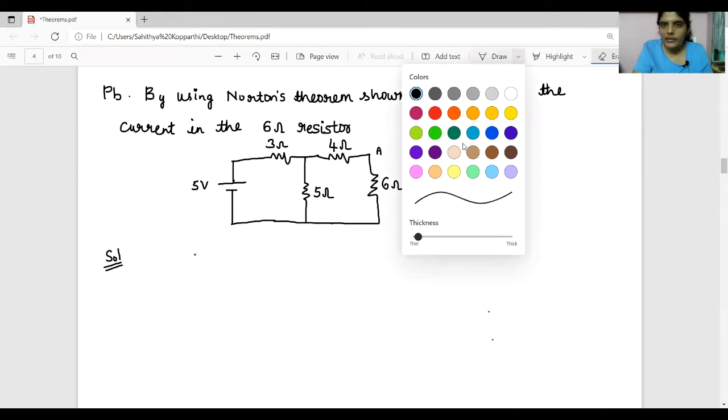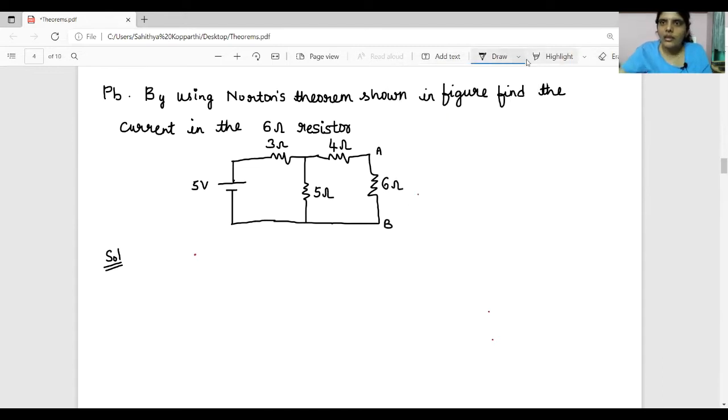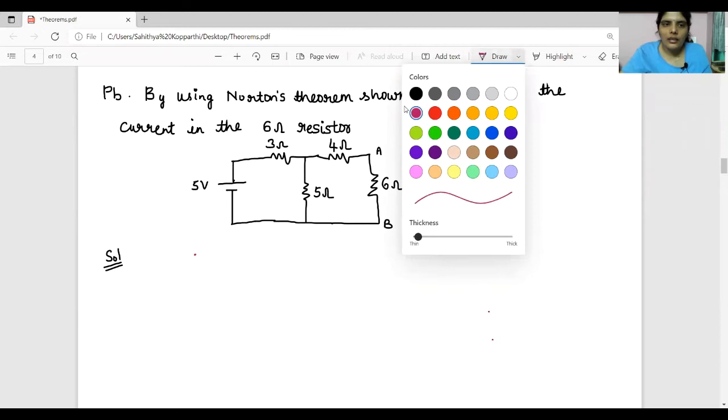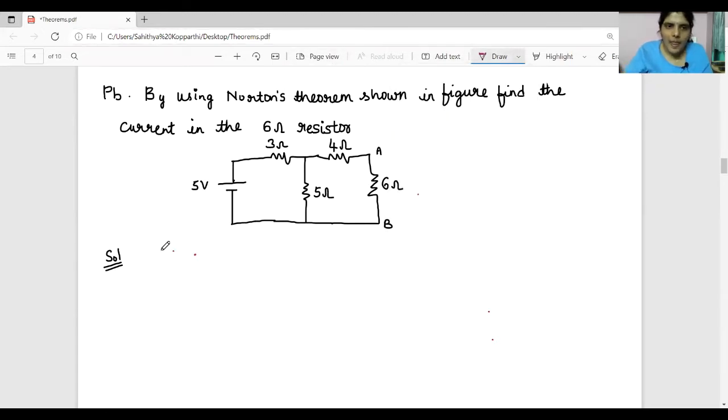That is step 1. So let us do step 1, calculation of IN, that is Norton's current. Short circuit the terminals AB.